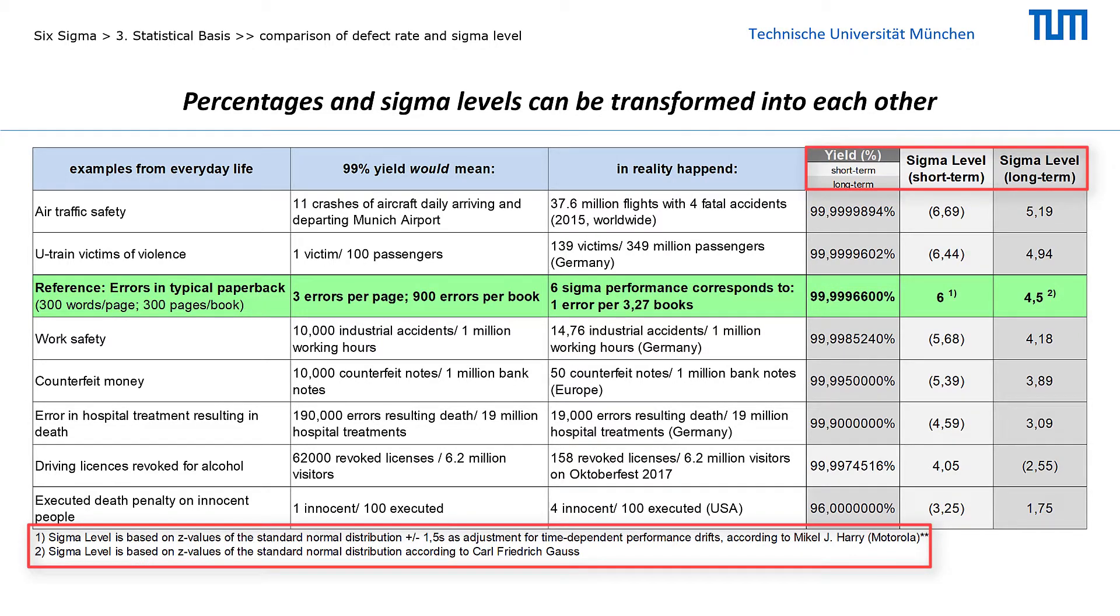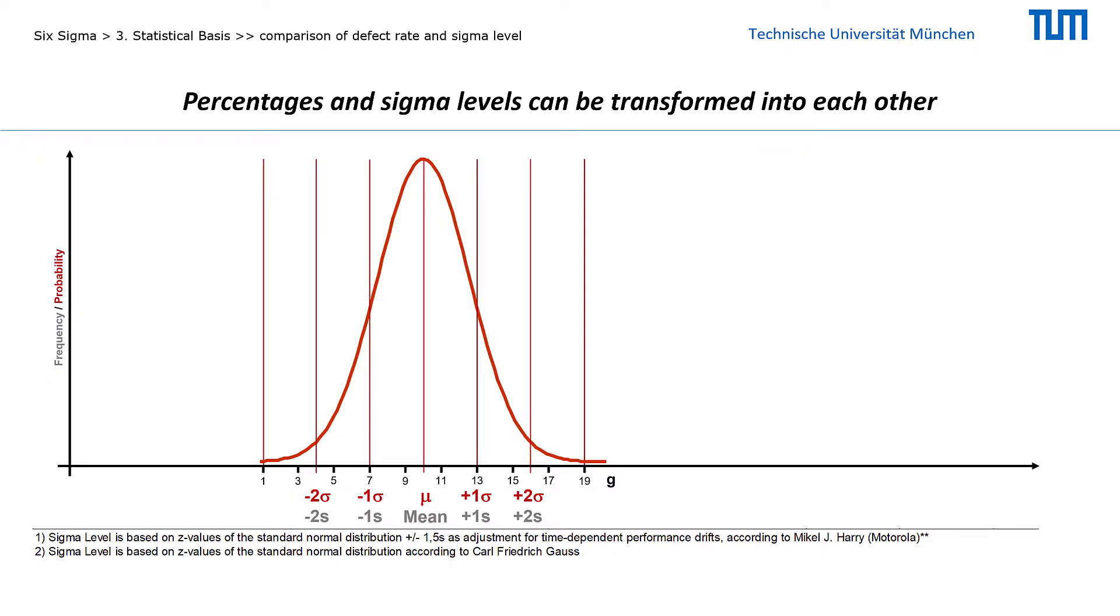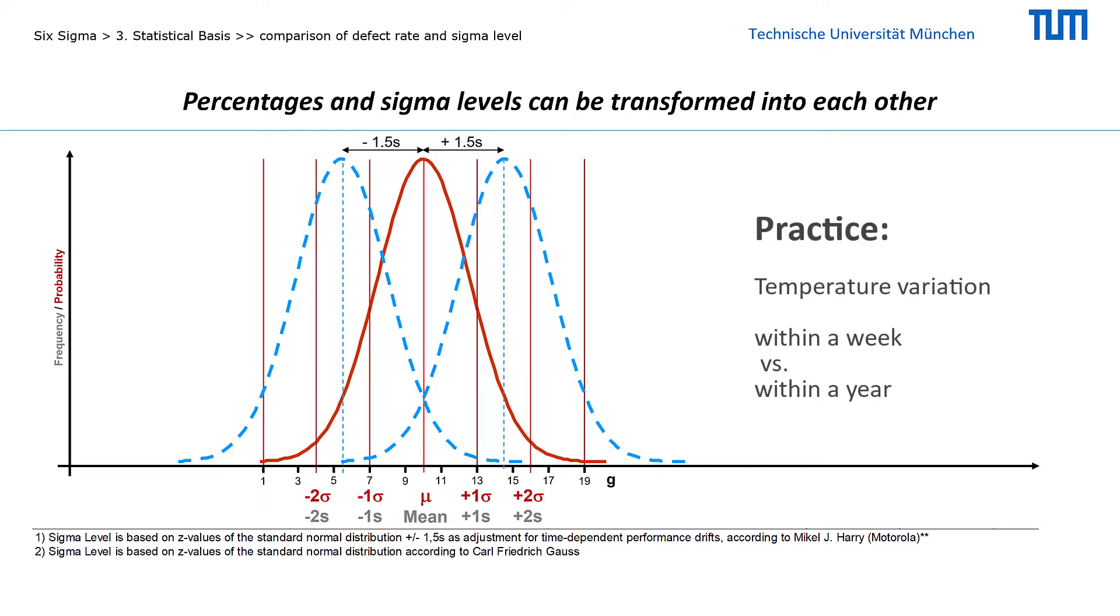What does the differentiation between short and long-term sigma levels mean? Observations of process performance over longer time intervals show that the mean values of the samples drift about 1.5 standard deviations around the true mean value. This is intuitively understandable when you think of a short-term temperature measurement over the course of a week and compare it with a long-term measurement over a year. The longer the time interval in which data is collected, the greater the probability that also larger deviations and extreme high and low values will occur. This increases the variability of the data and reduces the sigma level.